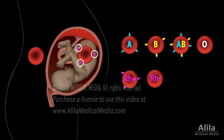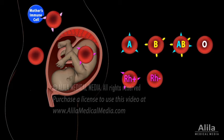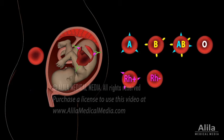Incompatibility happens when the baby has an antigen that the mother does not have. The mother's immune system interprets the antigen as foreign and produces antibodies to target the cells carrying it for destruction. While in principle HDN may occur with mismatch in any blood group, severe cases most commonly involve the D antigen of the RH system.